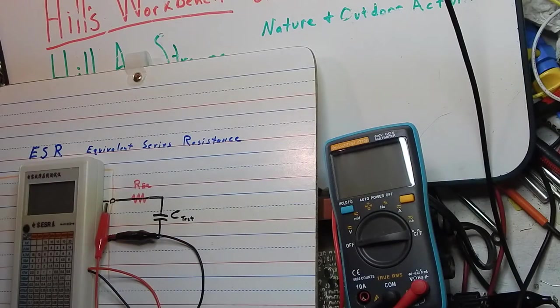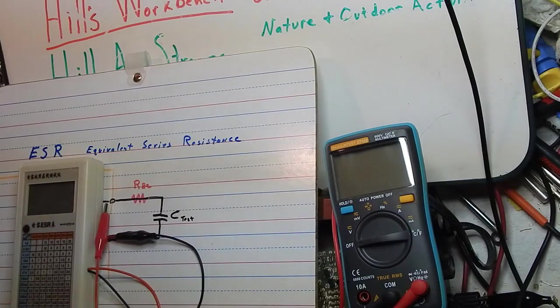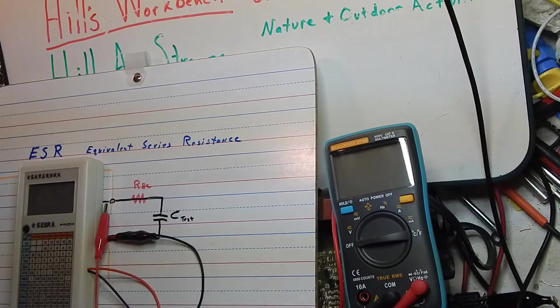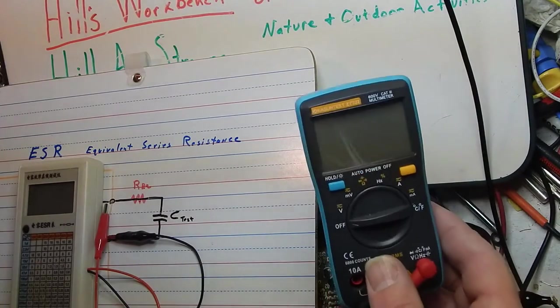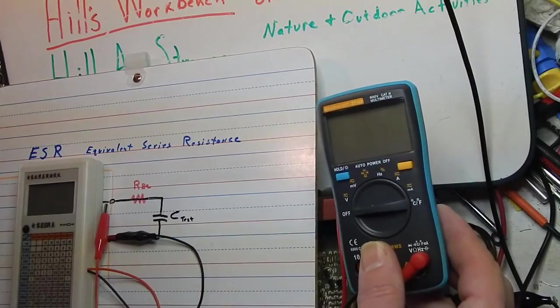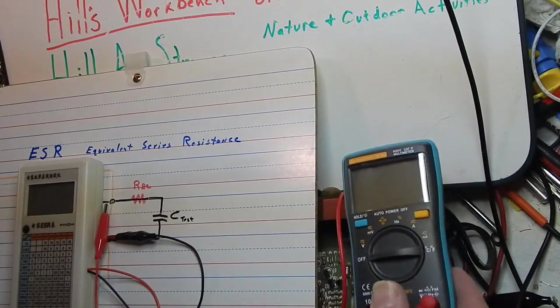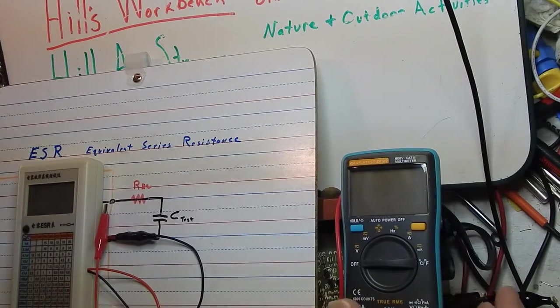There's a few different ways to test a capacitor and different parameters to test for. Commonly one will go through a circuit with a DVM or VOM, look for any shorted capacitors.